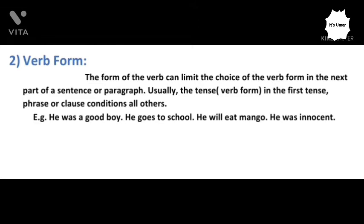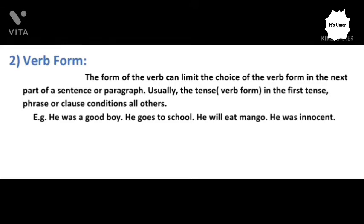We used past tense in the first sentence — 'He was a good boy' — but then 'He goes to school' shifts to present, 'He will eat mango' turns to future tense, and 'He was innocent' returns to past. This is not good writing. The paragraph should be correct if written as: 'He was a good boy. He went to school. He ate mango. He was innocent.' Now the verb form in all sentences is the same.